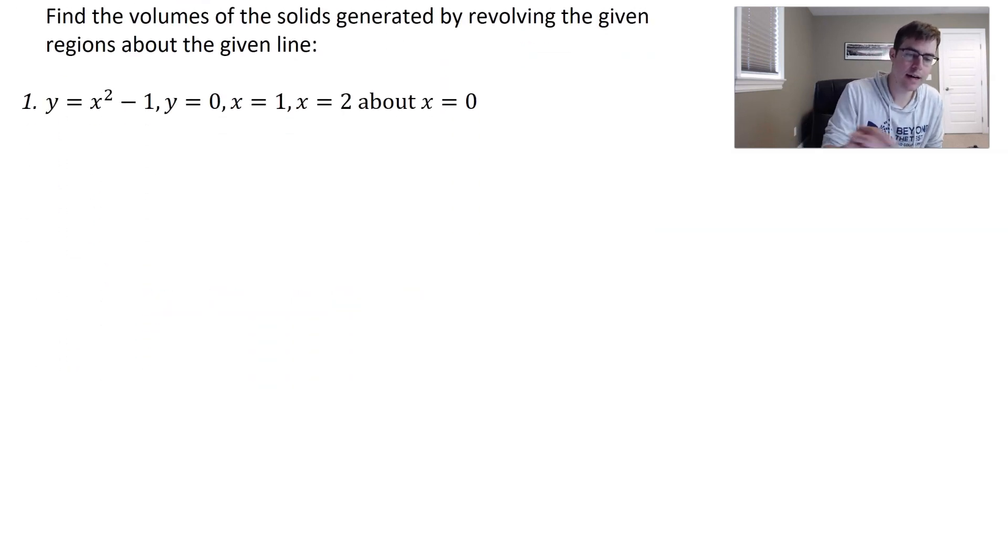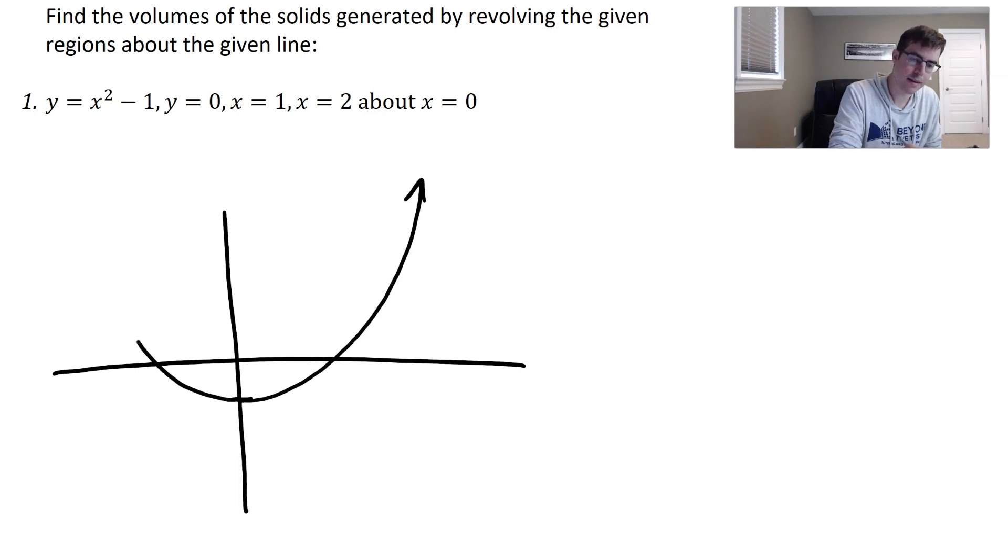First things first, we should go ahead and graph this. So x squared minus one, that means we're just going down one, and it's going to look something like this.